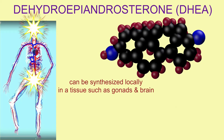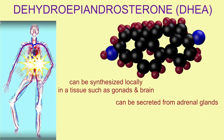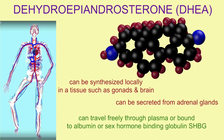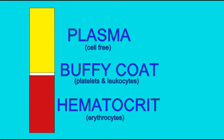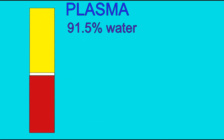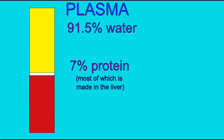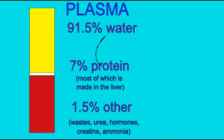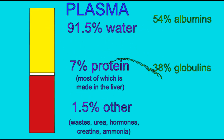Dehydroepiandrosterone, or DHEA, can be synthesized in some tissues like the gonads and the brain and used there, or it can be secreted as a circulating hormone from the adrenal glands. As such, it can travel freely through the plasma, or bound to the plasma protein albumin or the protein sex hormone binding globulin.